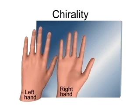A chiral object is one that is not superimposable on its mirror image. Your left hand is chiral. It cannot be superimposed on your right hand.